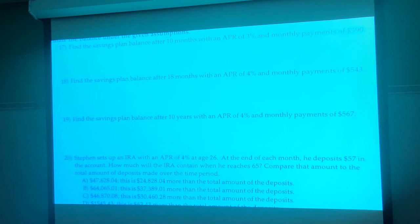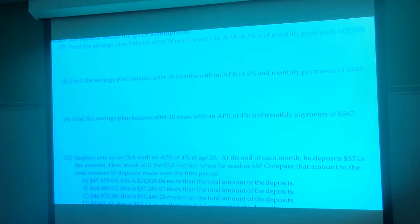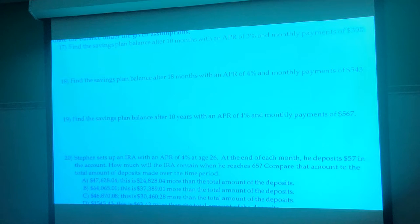So you would just put 10 — if they give it to you in months, you don't have to do the full N calculation. In the calculator you can just put the number of months directly, or if you want to see the math: because these are monthly payments you'd take 12 and multiply by 10 over 12, and you'll see the algebra comes out to 10 months anyway. So for number 17: 10 months, APR 3%, monthly payments of $390.